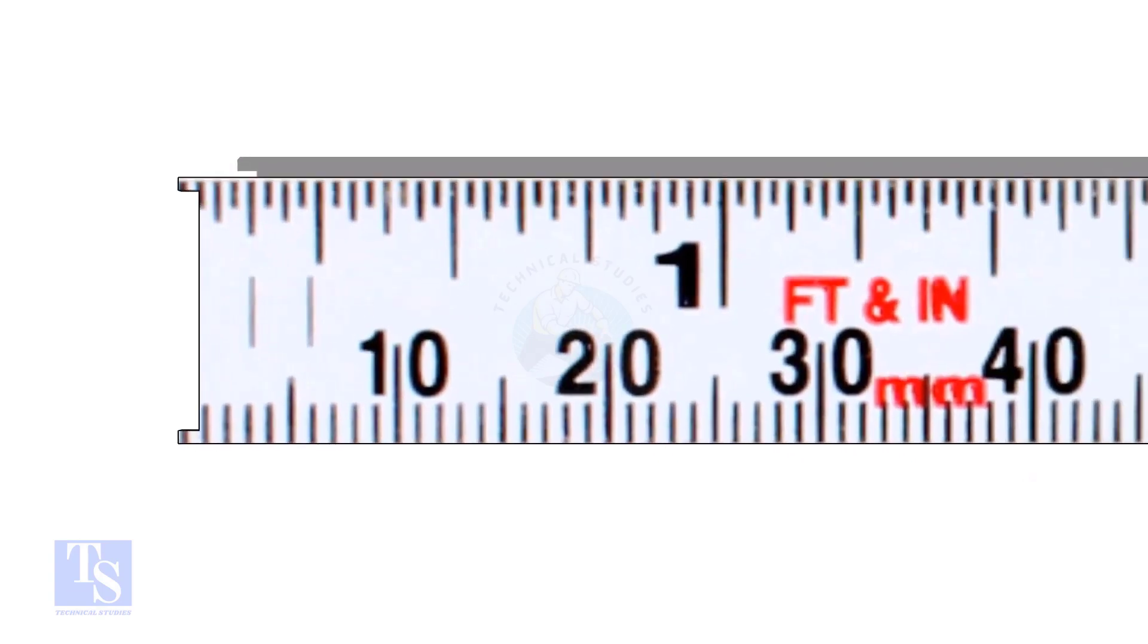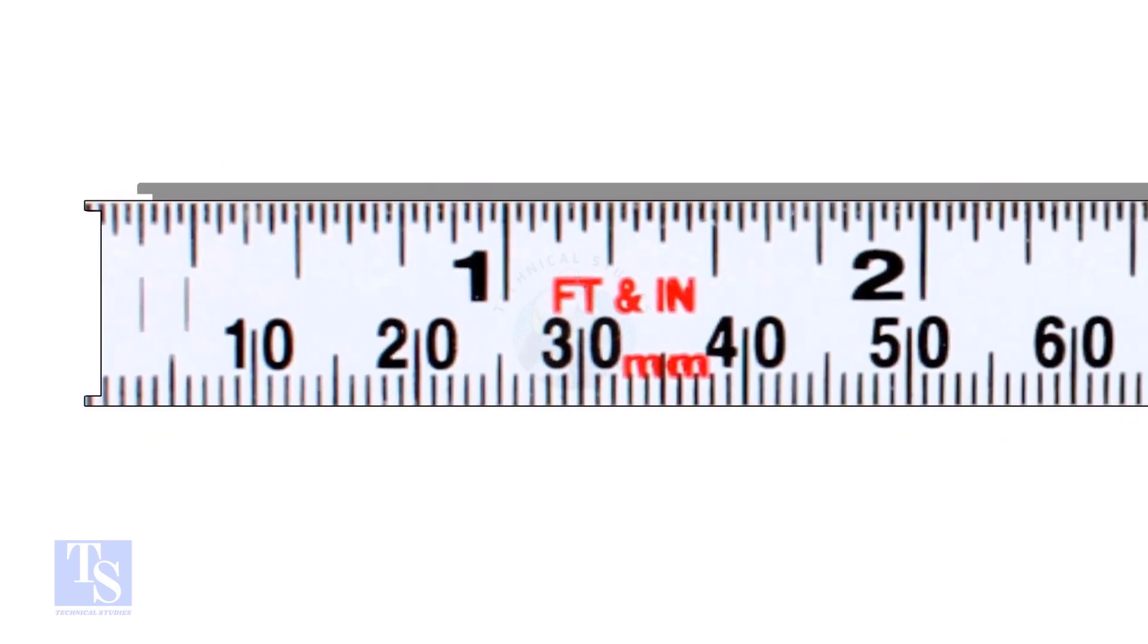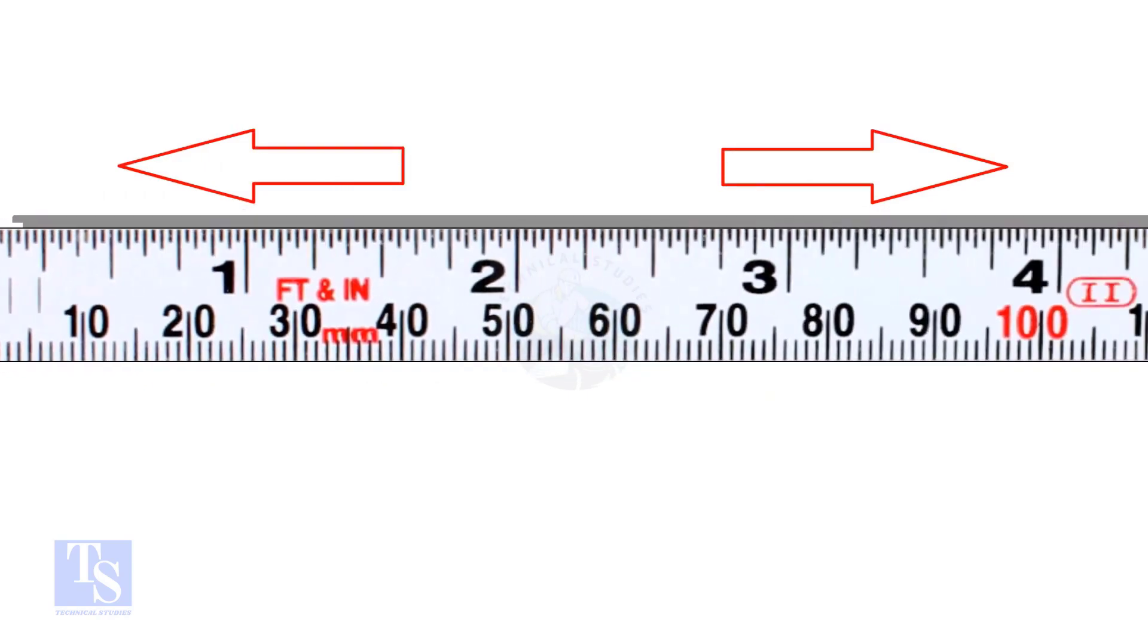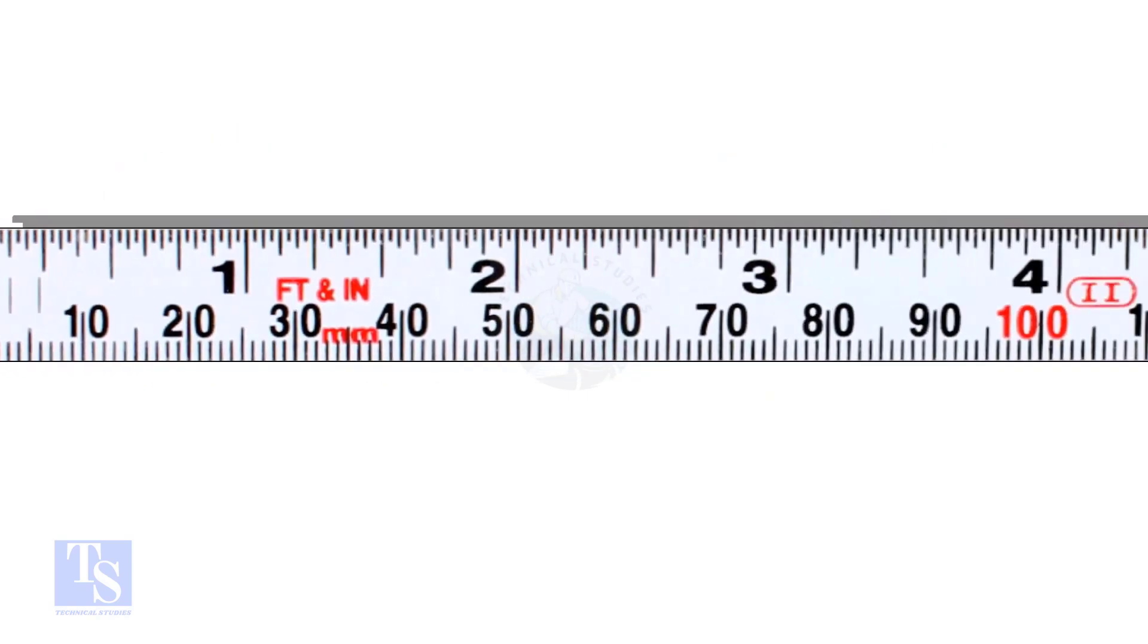Let us go to the subject now. Usually, on a measuring tape, there are two types of units. The imperial unit system, inch and the foot, and the metric unit system, millimeter, centimeter, and the meter.